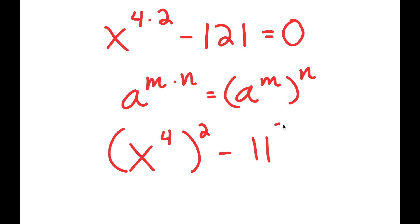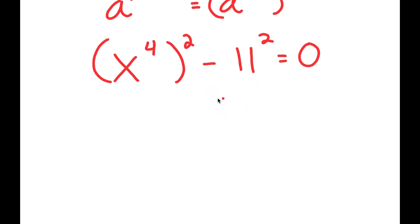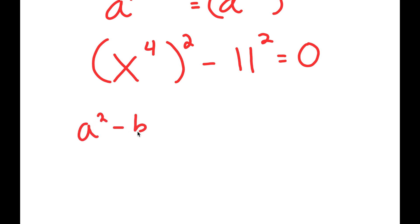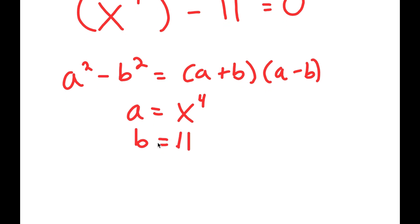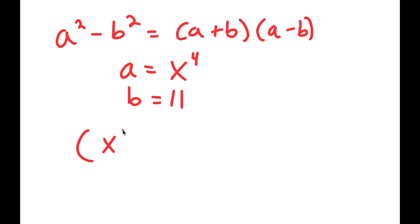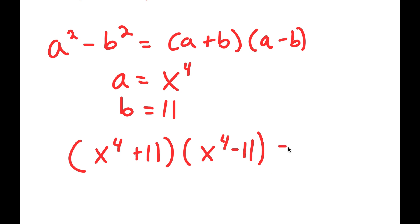The reason we're going to do that is so we can use an important algebraic property: if I have something in the form a squared minus b squared, this is equal to a plus b times a minus b. So in this case, a is x to the power of 4 and b is 11. So I get x to the power of 4 plus 11, times x to the power of 4 minus 11, which is equal to zero.